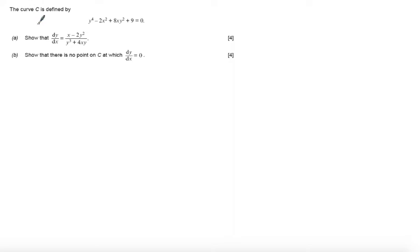A curve C is defined by y to the power of 4 minus 2x squared plus 8xy squared plus 9y equals 0. Show that dy by dx is equal to x minus 2y squared divided by x cubed plus 4xy. So this is implicit differentiation.